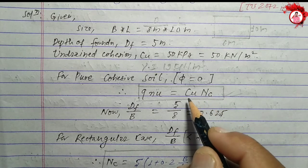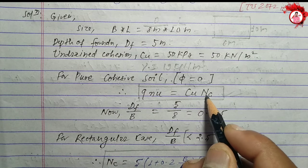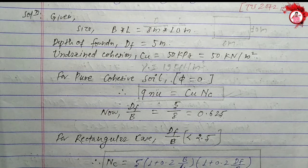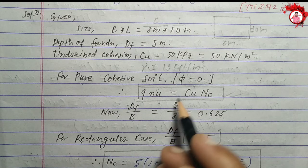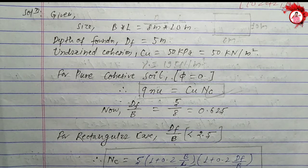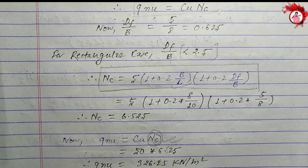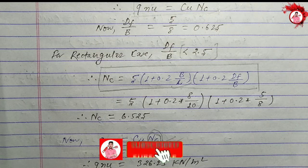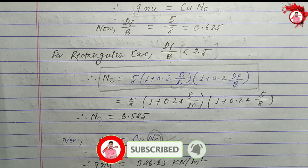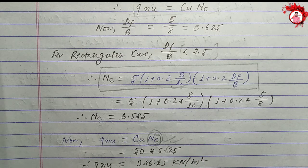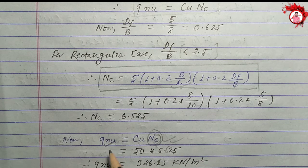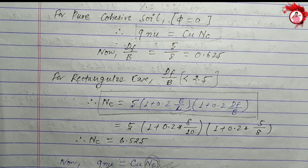The undrained cohesion value — the Nc value — so applying this formula: the net shape bearing capacity formula. If such a question comes related to this foundation, you should be able to solve it. If you find the net shape, you should be able to calculate the ultimate bearing capacity.